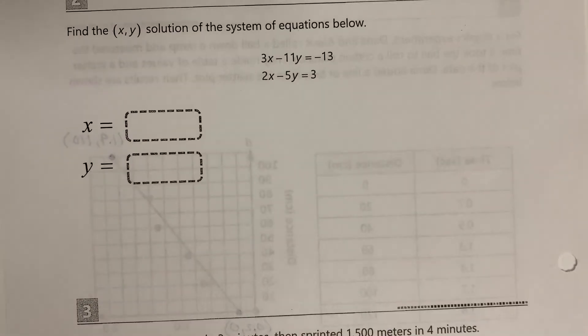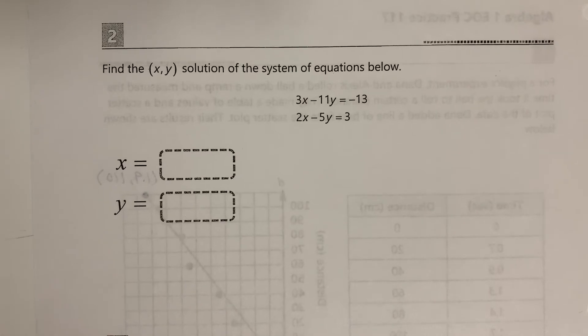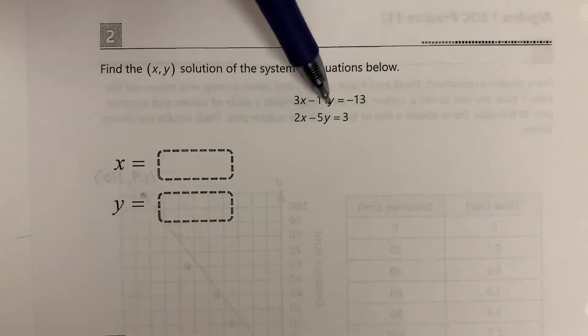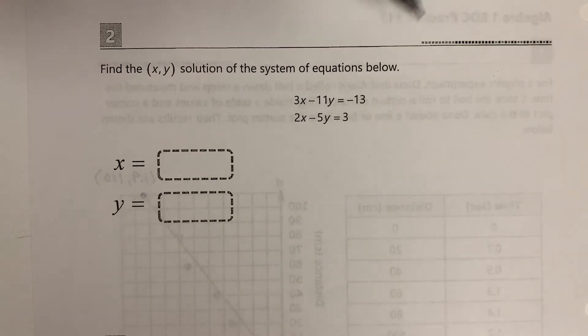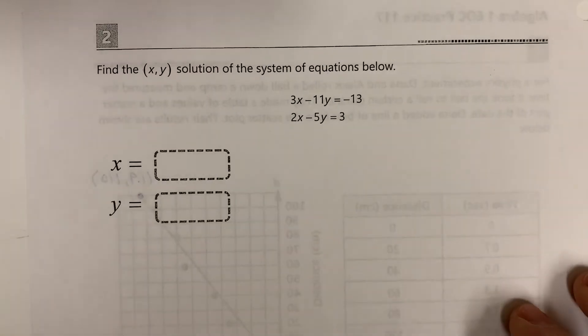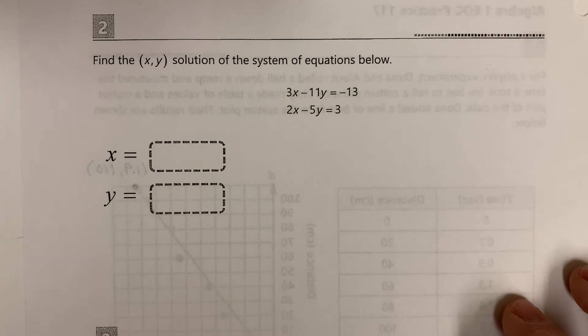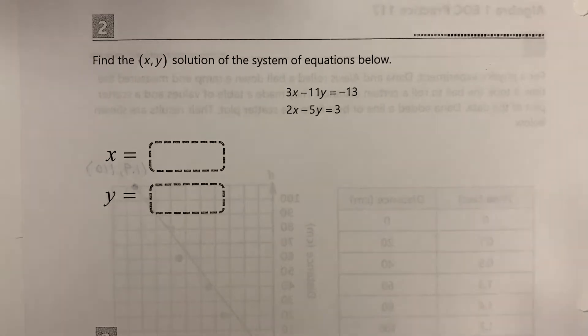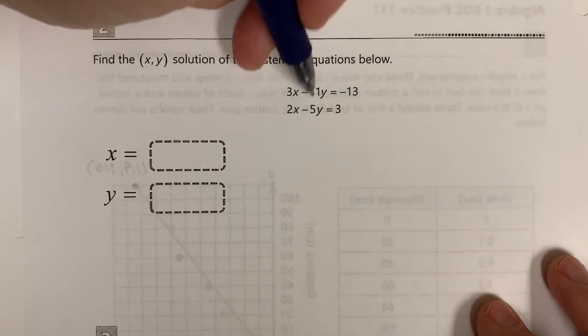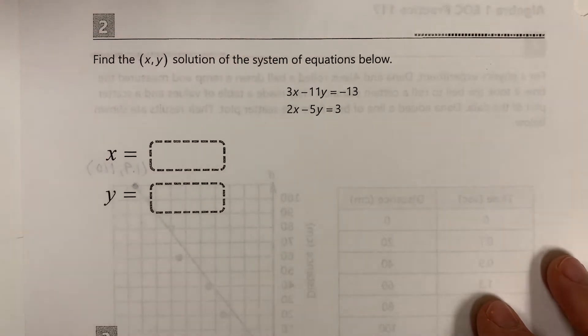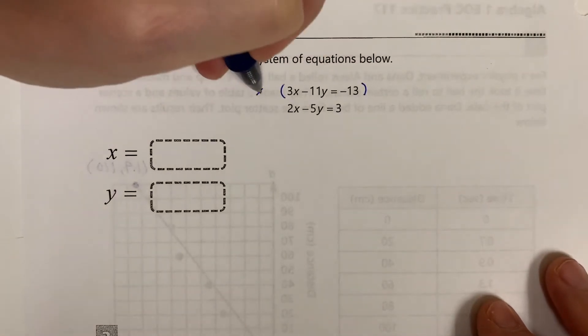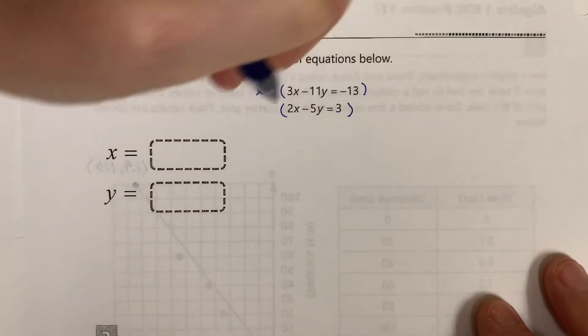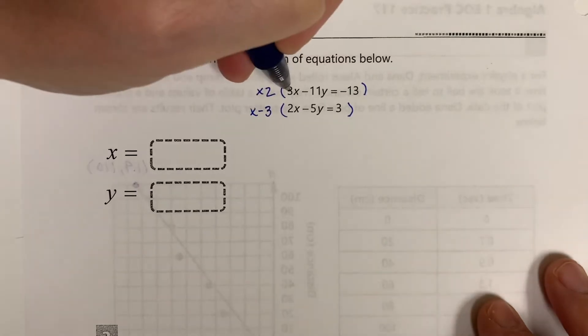Let's do number two. Number two, you have a system of equations: 3x minus 11y equals negative 13, and 2x minus 5y equals 3. I would solve this by elimination. So what I might do is try to eliminate, we can eliminate the x's. I'm going to multiply the top one by 2 and the bottom one by negative 3. That way I'll get a 6x and a negative 6x.